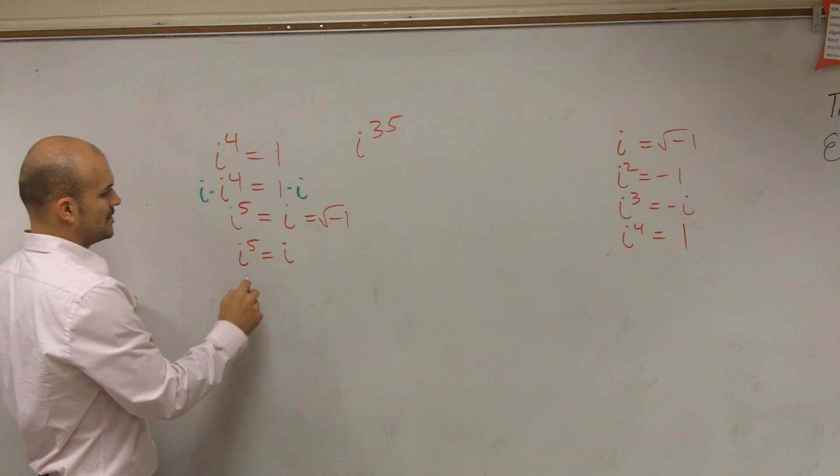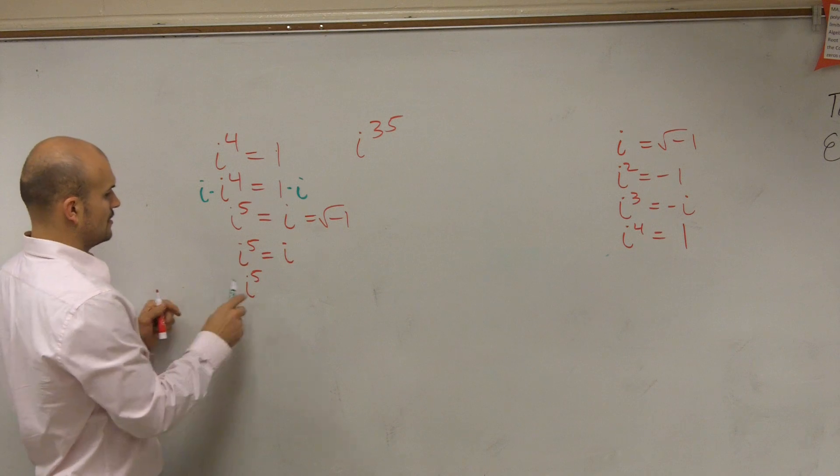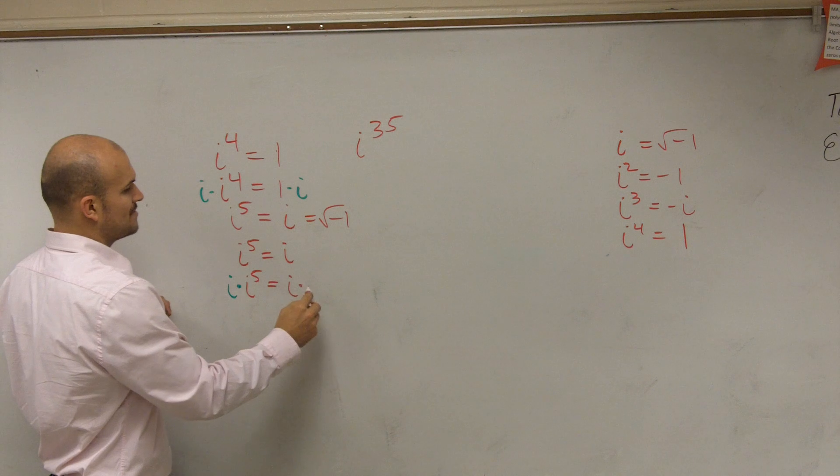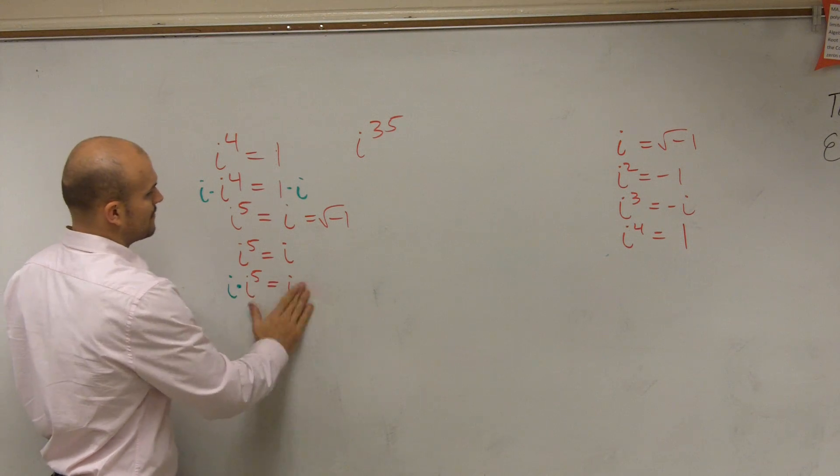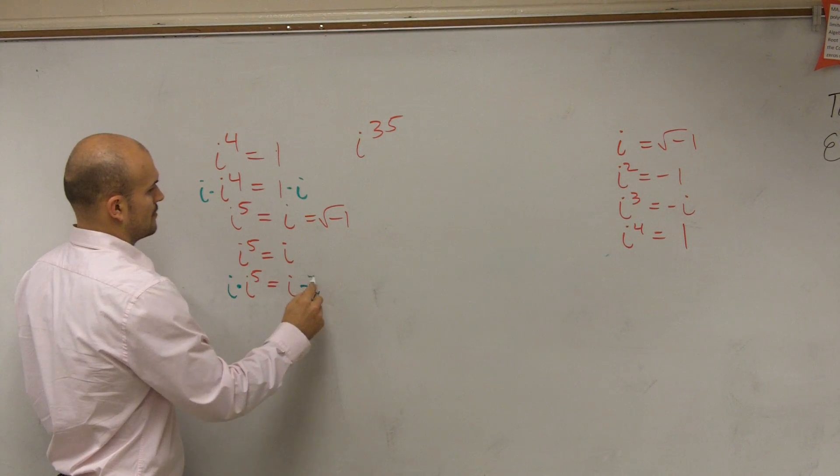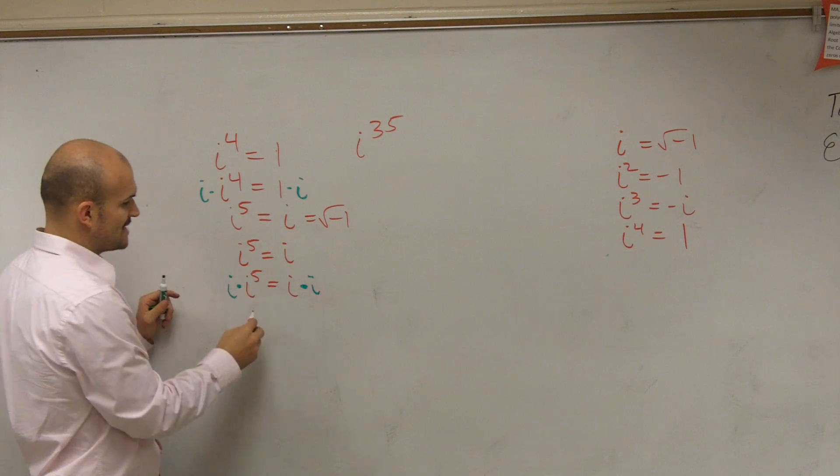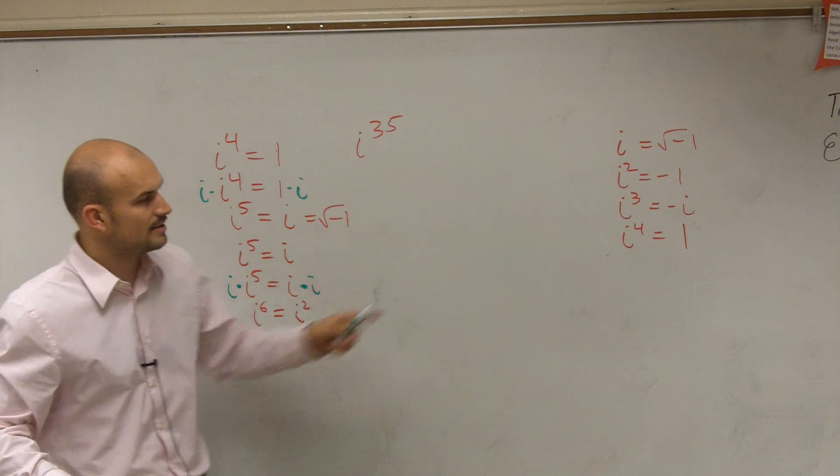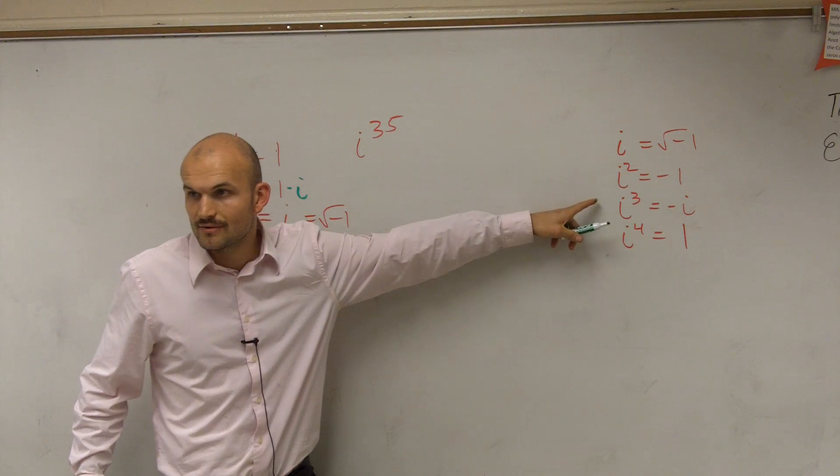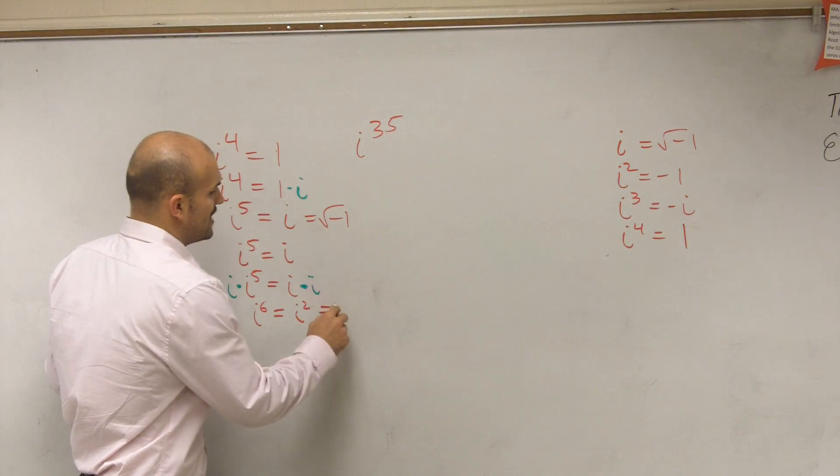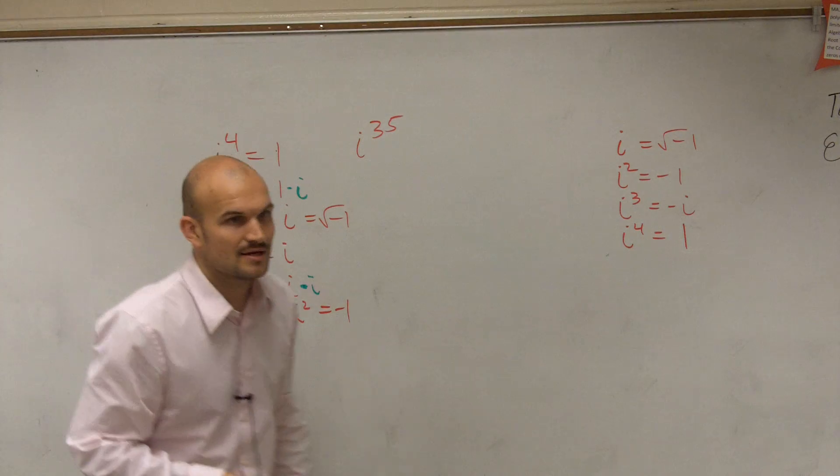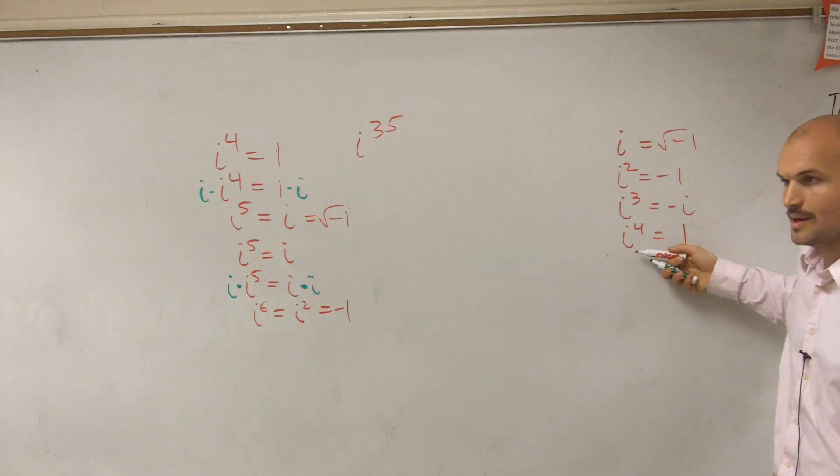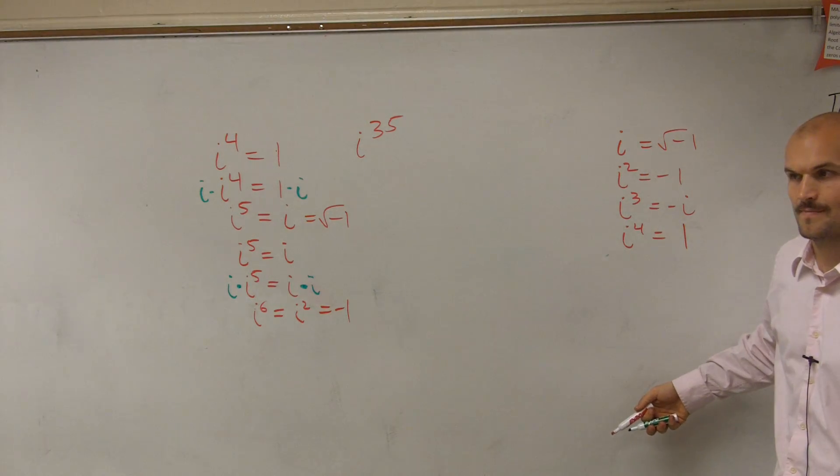So let's do i to the sixth. I do i to the fifth times i equals i times i again, right? So therefore, i times i to the fifth is i to the sixth, which equals i squared. And i squared, we again represent as equal to negative one. So the main important thing you guys need to understand is this is actually repeating itself, right? It goes up to four, and then it repeats itself again.